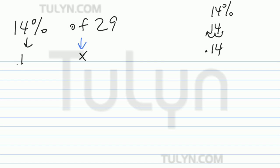So we're going to replace 14% with 0.14 times 29. Just bring everything down. And go ahead and find the product of 29 times 14.